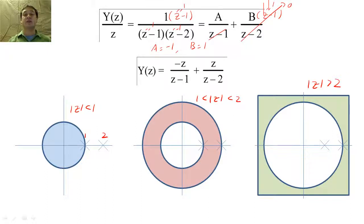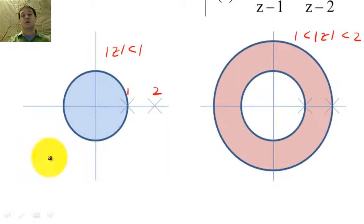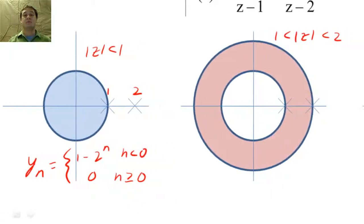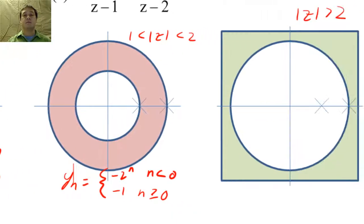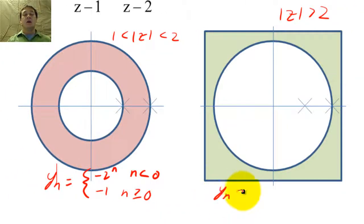We can find the inverse Z transform by using a lookup table. For the first ROC, Y of N will be only left-sided. For the second ROC, Y of N will be two-sided. For the third ROC, Y of N will be only right-sided.